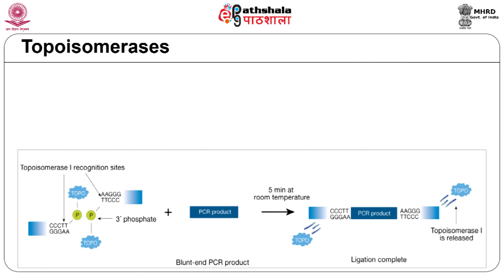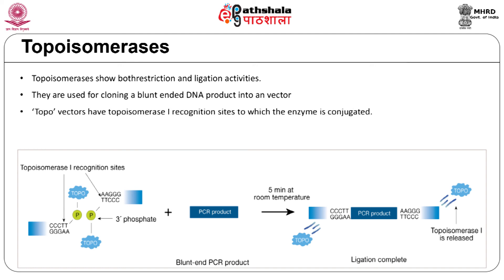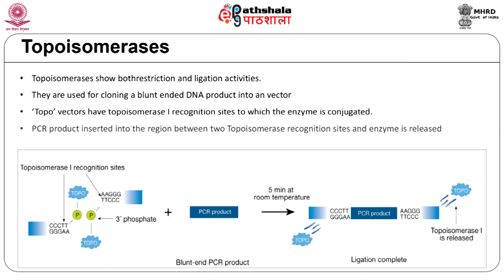Type 1 topoisomerases are present in bacteria and play a role in changing the topology of circular DNA. By cutting a single strand of DNA, passing the other strand through it, and rejoining the cut ends, they relax supercoiled plasmids. Due to their restriction and ligase activities, topoisomerases are used in cloning DNA into a plasmid vector. The topovectors have a topoisomerase I conjugated to the 3 prime ends of the topoisomerase recognition sites. When a blunt-ended DNA fragment is added to this vector, the fragment is inserted between the two topoisomerase recognition sites.